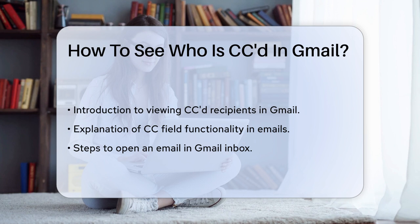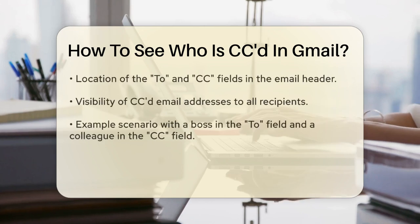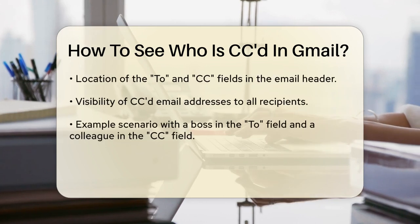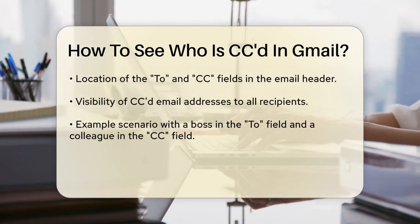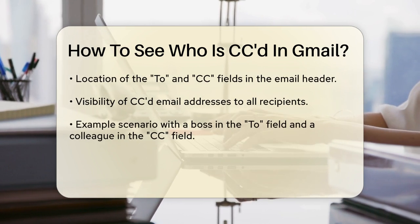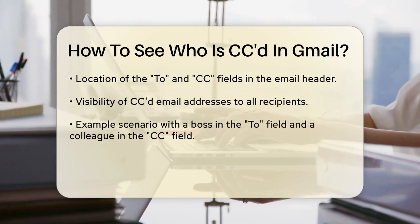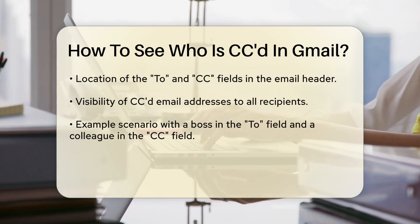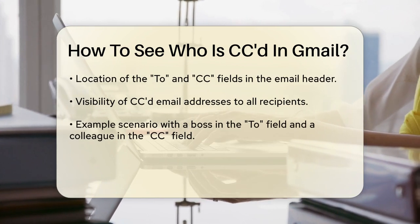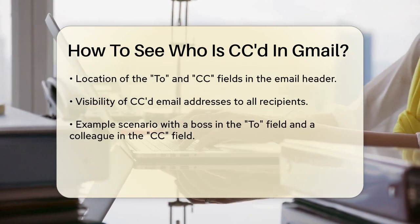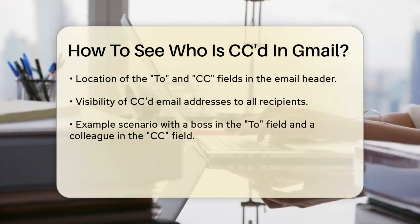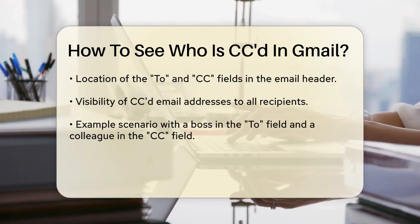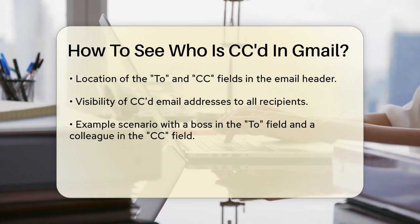First, open the email in your Gmail inbox. Look at the top of the email where the recipient addresses are displayed. You'll see the To field, which lists the primary recipients, and below it you'll find the CC field. In the CC field, you'll see the email addresses of all the recipients who were also sent a copy of the email. This field is visible to everyone who receives the email, whether they are in the To or CC fields.